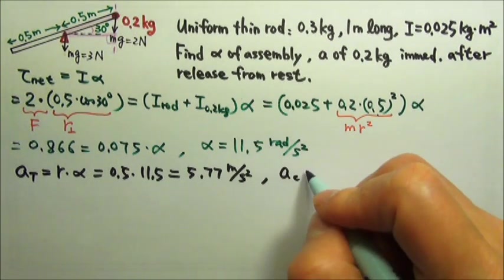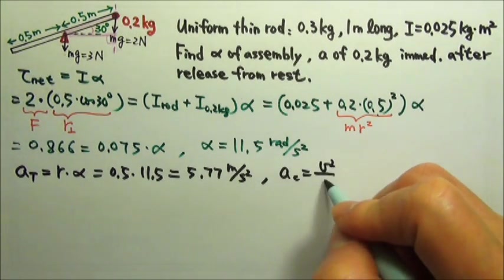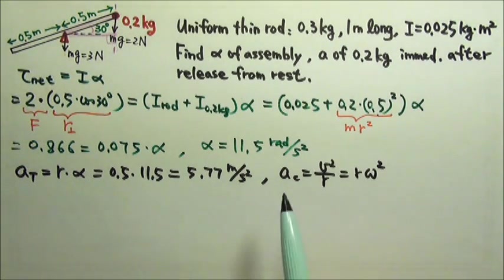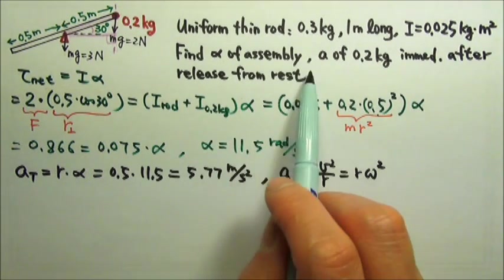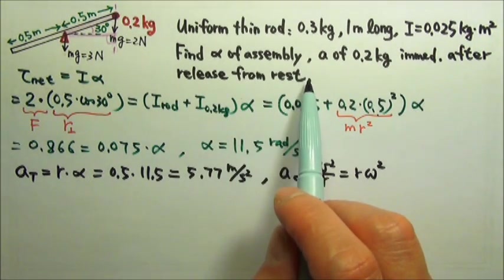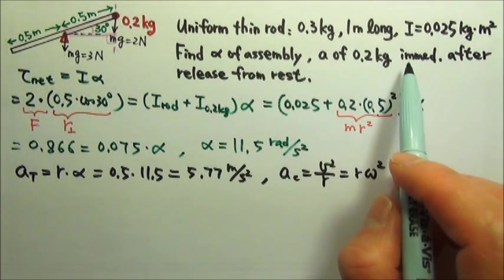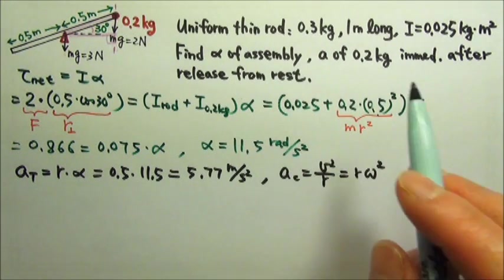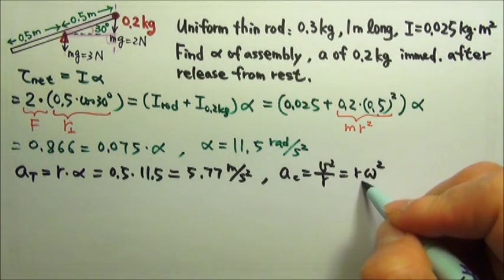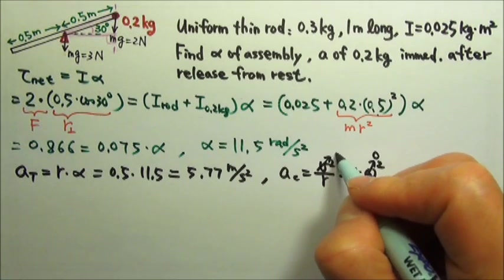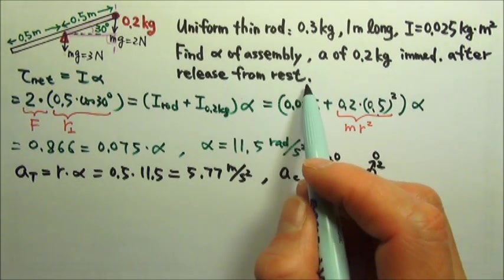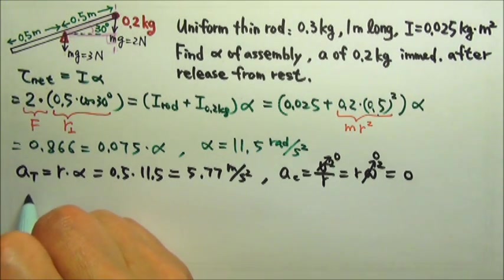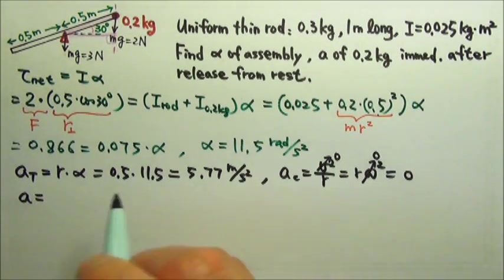What about the centripetal acceleration? It is v² over r, or r·ω². Now, the system is released from rest, and we want the acceleration immediately after the release. So immediately after release, the moment of release, the angular speed is zero. The speed is zero because it's released from rest. So the centripetal acceleration is zero. That means the acceleration is just the tangential acceleration, 5.77 meters per second squared.